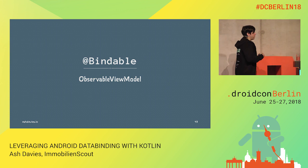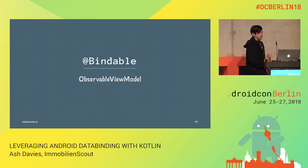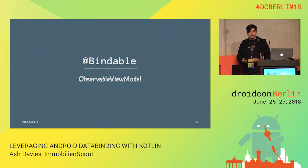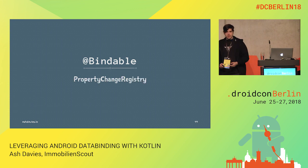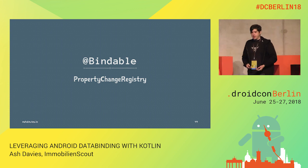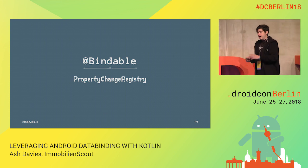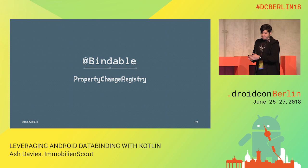We can create an observable view model — a normal view model that extends from the Observable interface and uses the implementation from PropertyChangeRegistry to let observers know that something has changed. We can either notify that everything has changed or just an individual field.